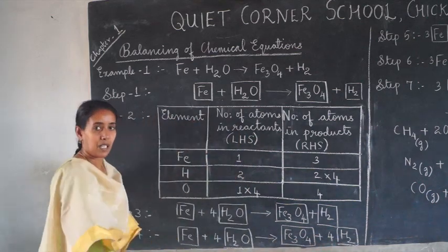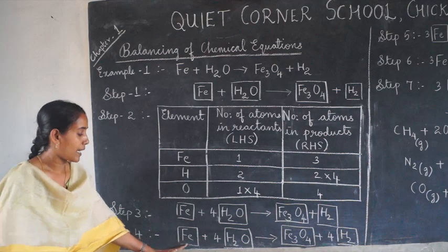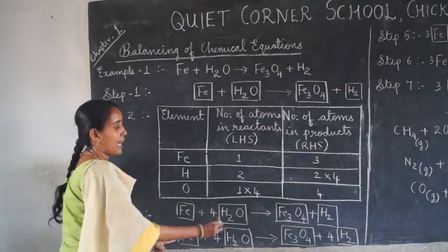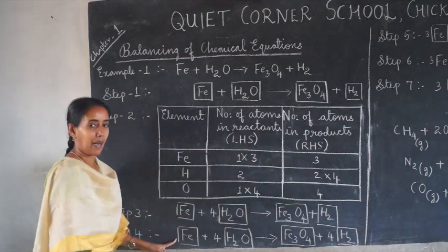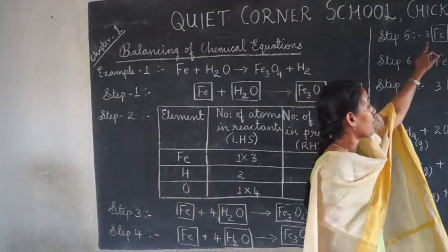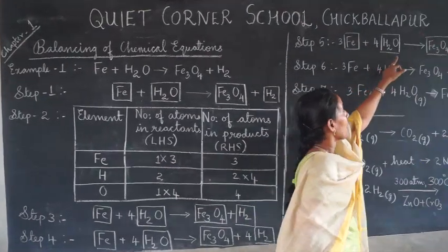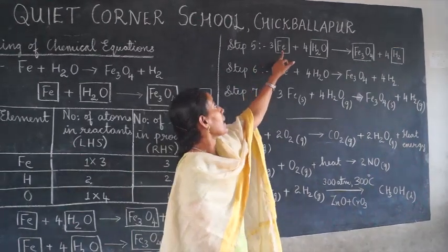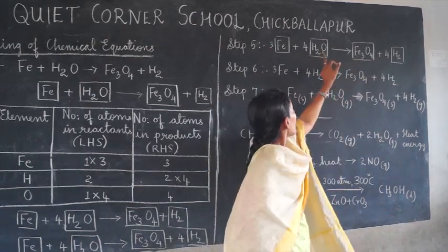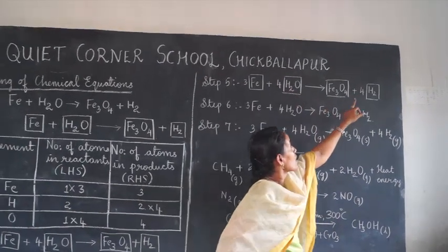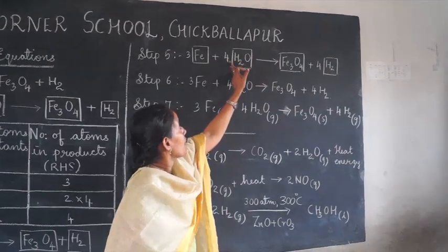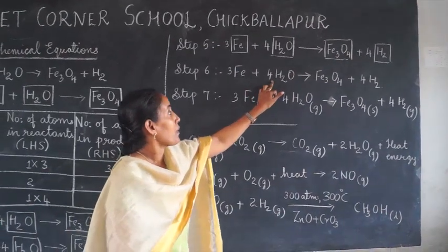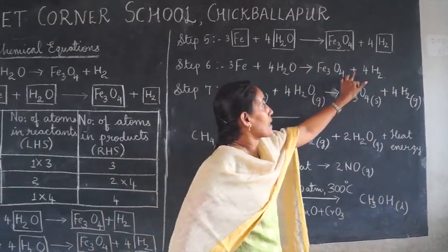The remaining element is iron: one on the left, three on the right. To balance it, multiply iron on the left by three. So the balanced equation is: 3Fe + 4H₂O → Fe₃O₄ + 4H₂. Check: iron — three on both sides; hydrogen — 4×2=8 on both sides; oxygen — 4×1=4 on both sides. The equation is now balanced.